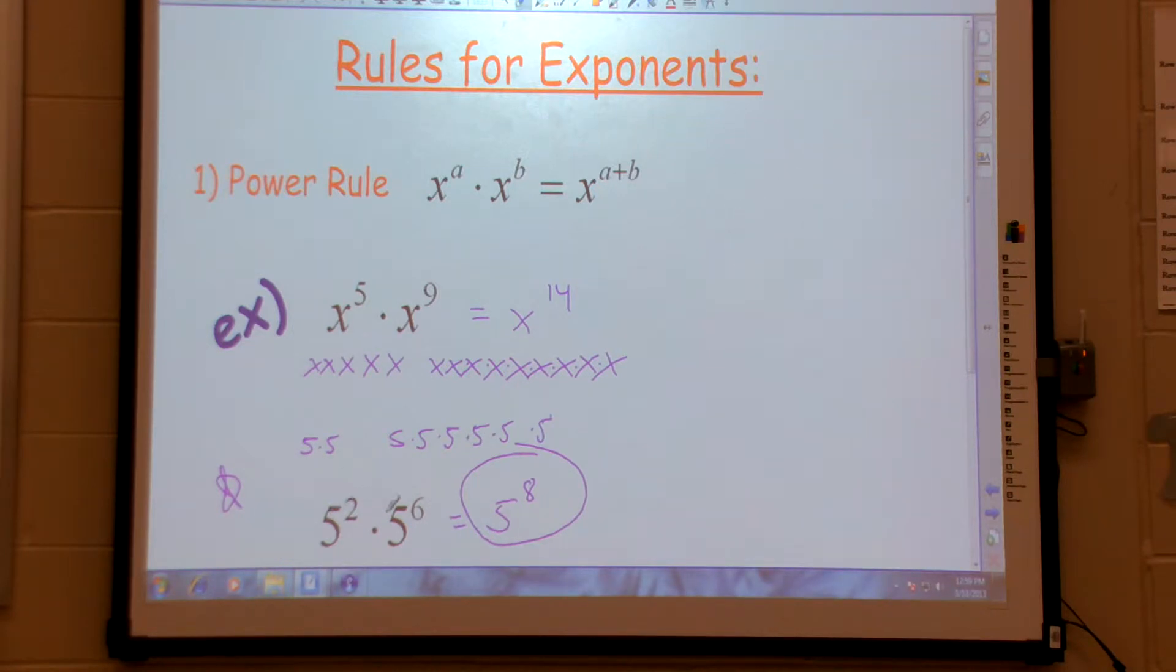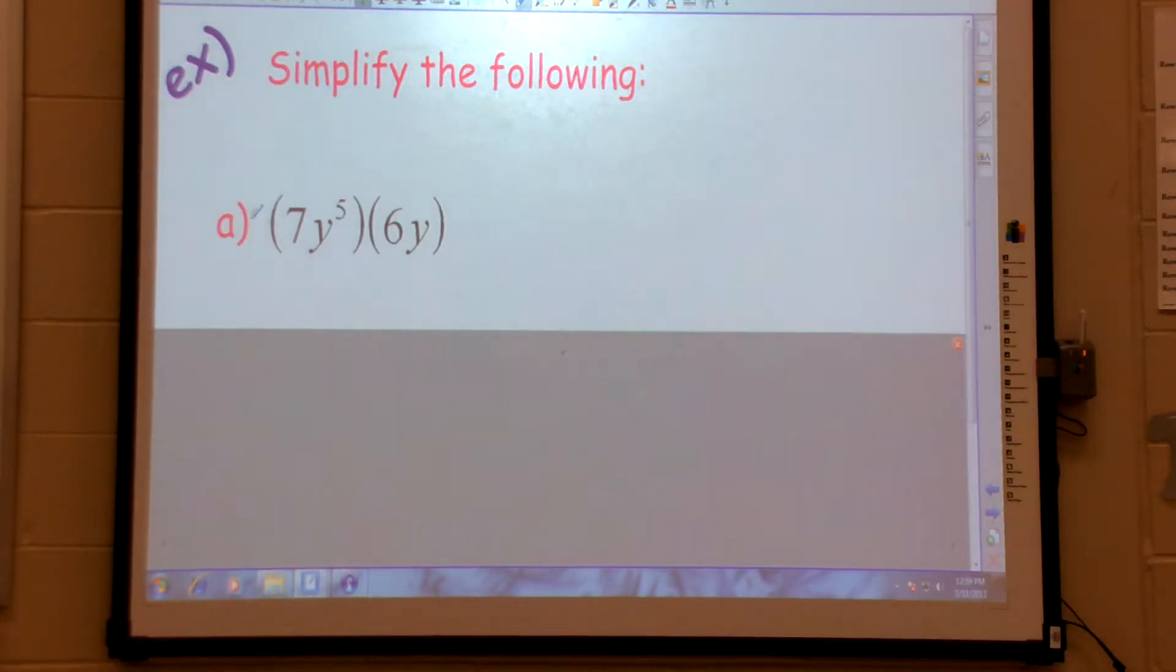So over here, we do not multiply the 5s because they're bases. But here, these are coefficients. And we see the difference. These are not to any power.